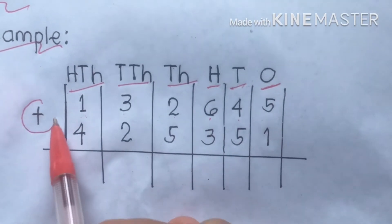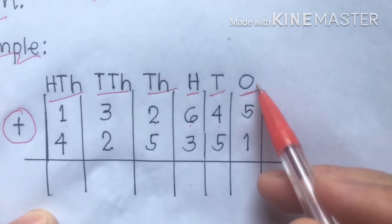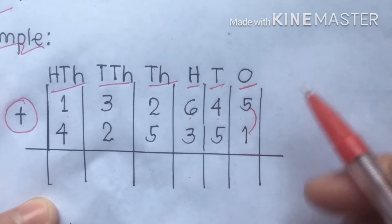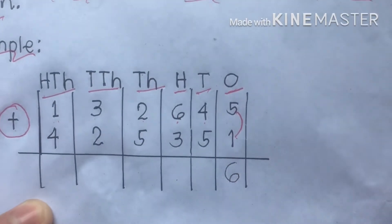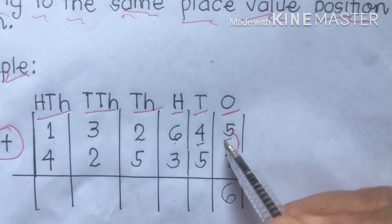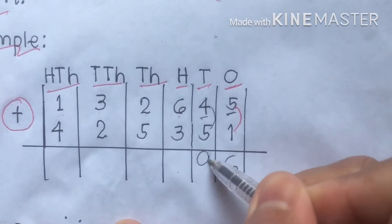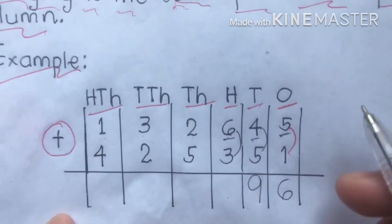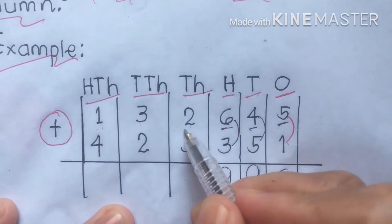This is an addition example. We're going to start with the ones place value. Five and one — you add them together and the result is six. After this we proceed to the next number. We have four, then connect to five, add them together, and we write nine. Next number six, join to three, so we have nine.